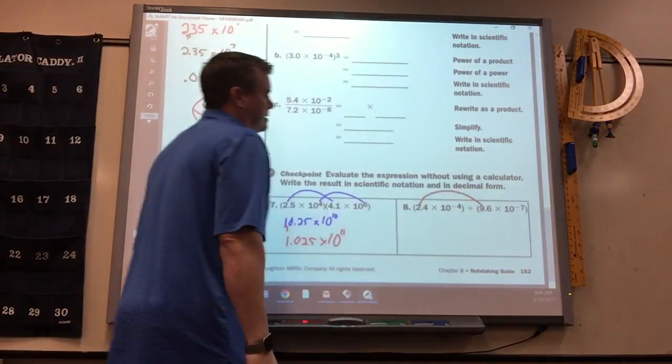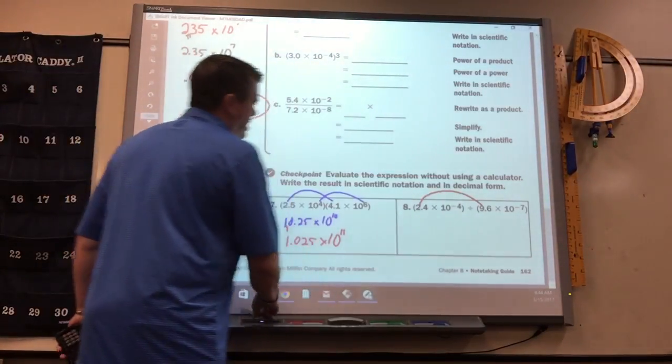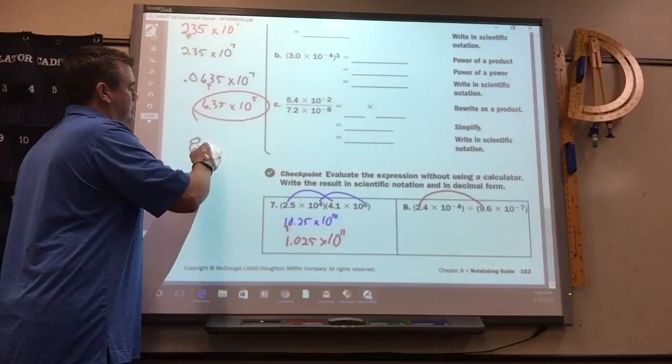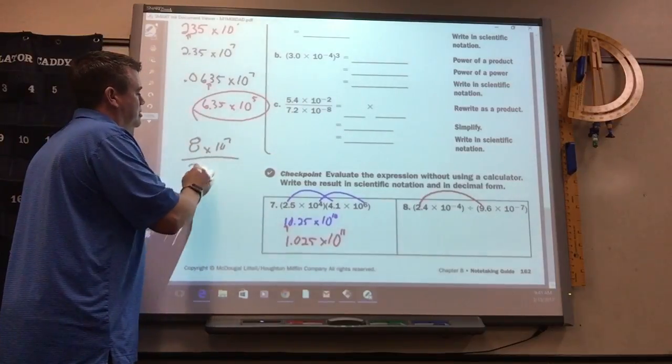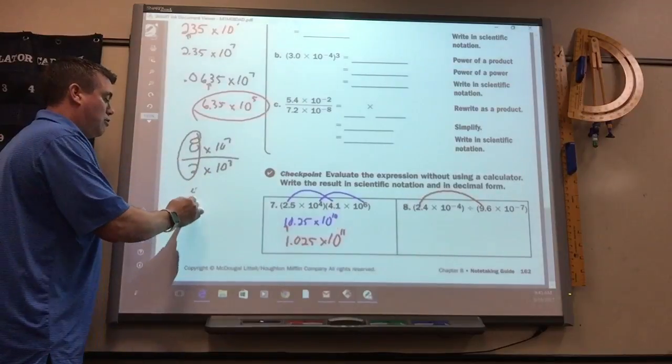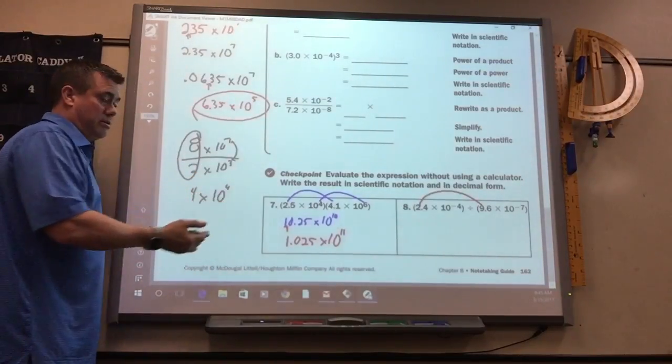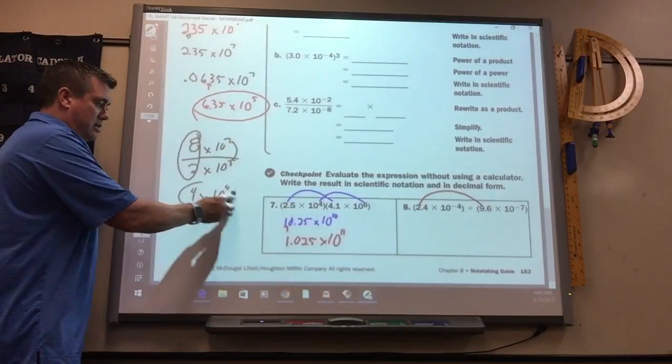When you divide, again, sometimes you get easy ones. Like, 8 times 10 to the 7th, divided by 2 times 10 to the 3rd. 8 over 2 is 4. That would make 10 to the 4th. And, it's done. It's scientific notation.